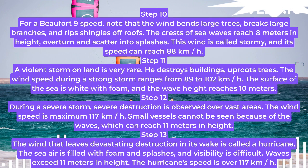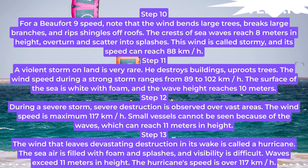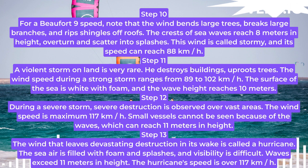Step 10. For a Beaufort 9 speed, note that the wind bends large trees, breaks large branches, and rips shingles off roofs. The crests of sea waves reach 8 m in height, overturn, and scatter into splashes. This wind is called stormy, and its speed can reach 88 km/h.